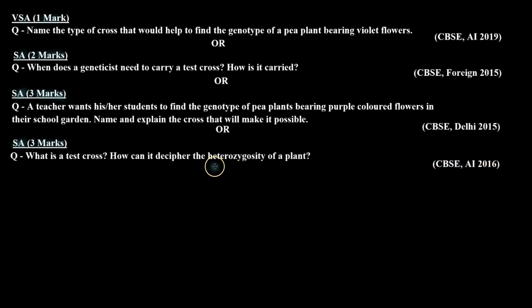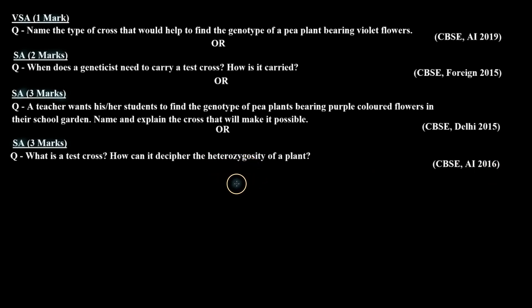Basically, the question is that in a garden there are pea plants with violet colored flowers, and we know that violet color in pea plants is a dominant trait. So we need to know the genotype of these plants.